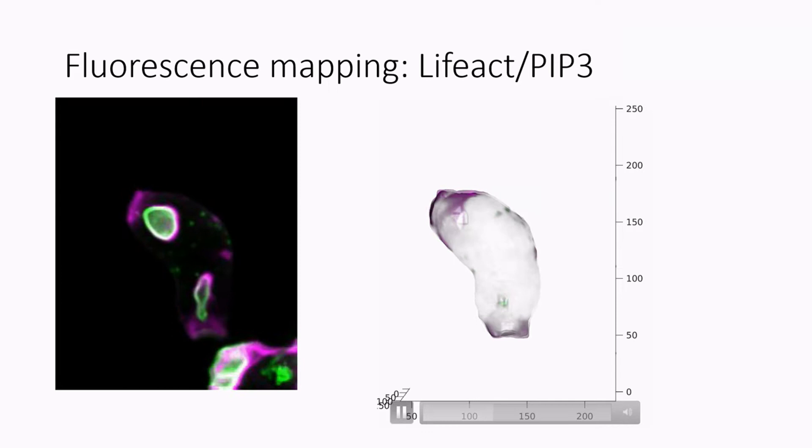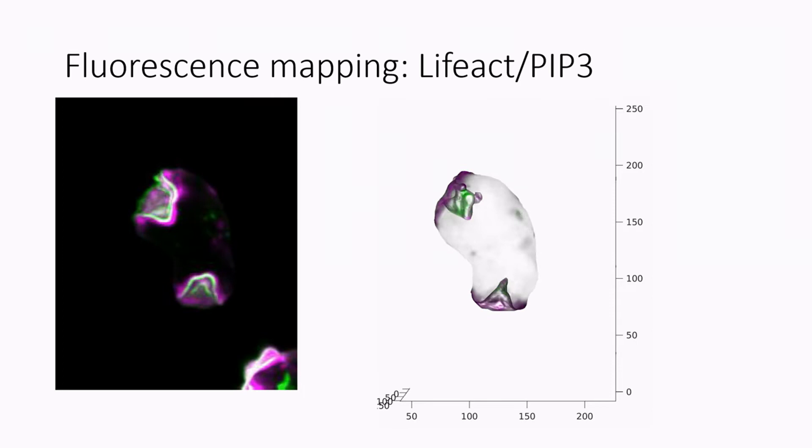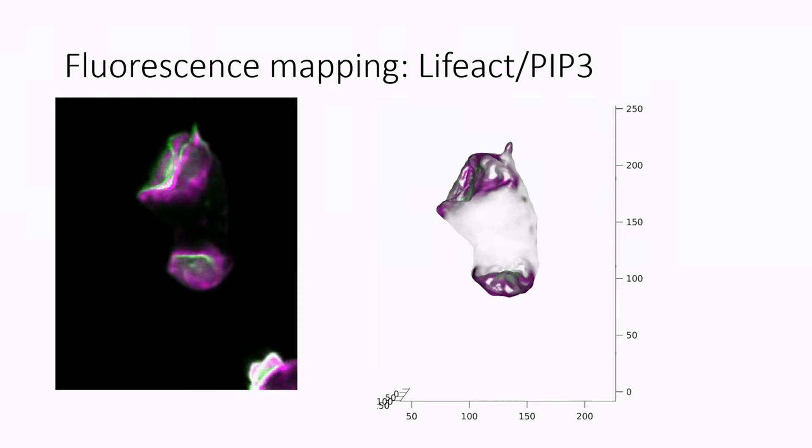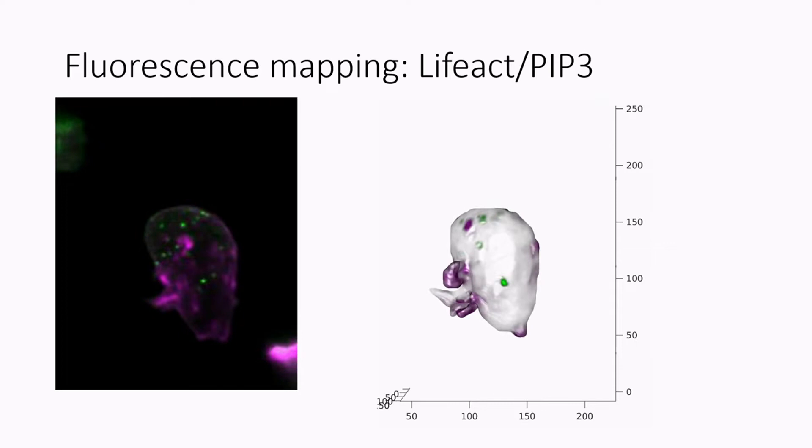So once we've segmented our cells, we can then project the fluorescence values onto the cells. As I say, we just use the nearby maximal fluorescence values, and we can do this with LifeAct and PIP3.